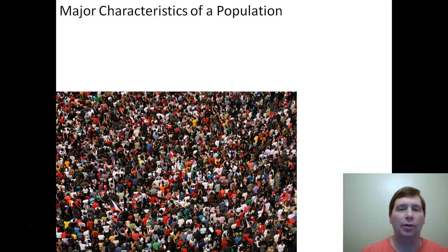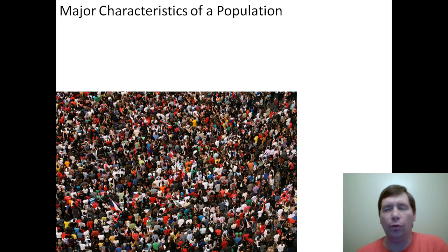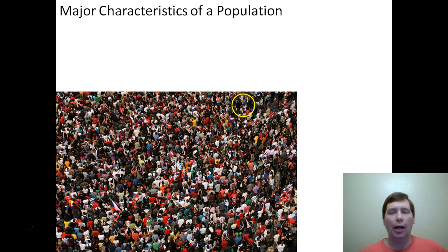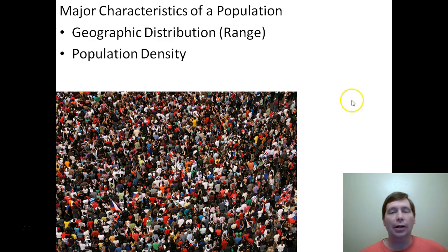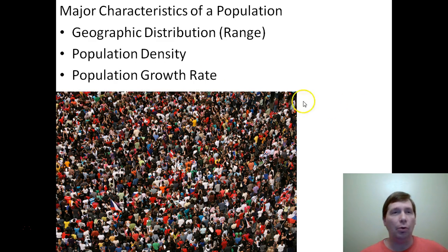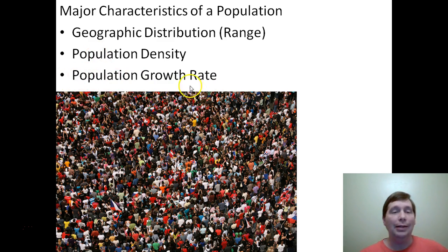So when we study a population, there are three major characteristics we're interested in. The three main characteristics are: its geographic distribution — where on the planet it lives; its population density — how many individuals are living in a given space; and its population growth rate. We'll talk about geographic distribution and population density quickly, then dive into population growth rate in more depth.